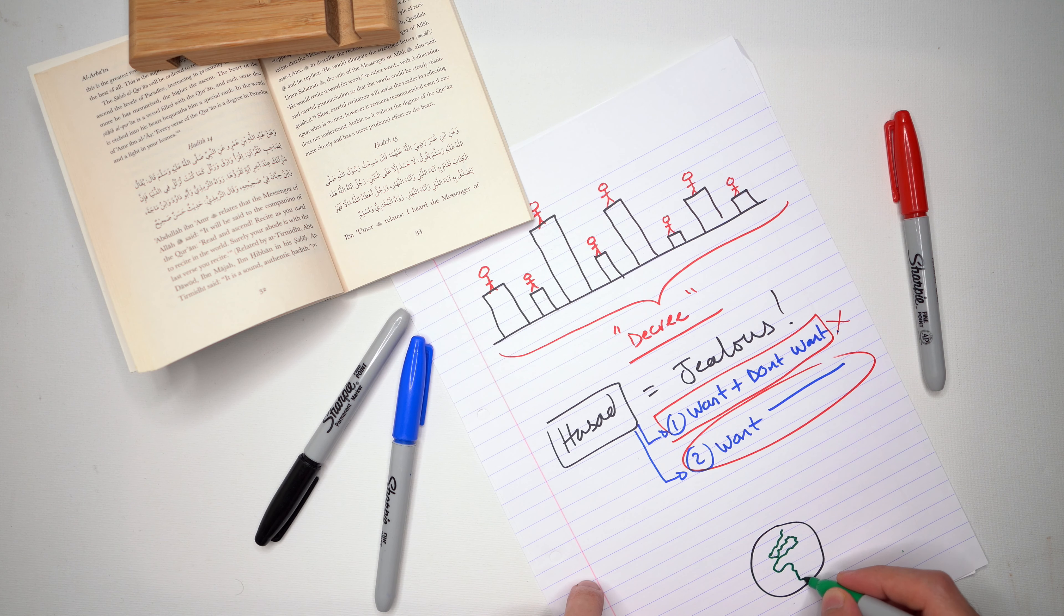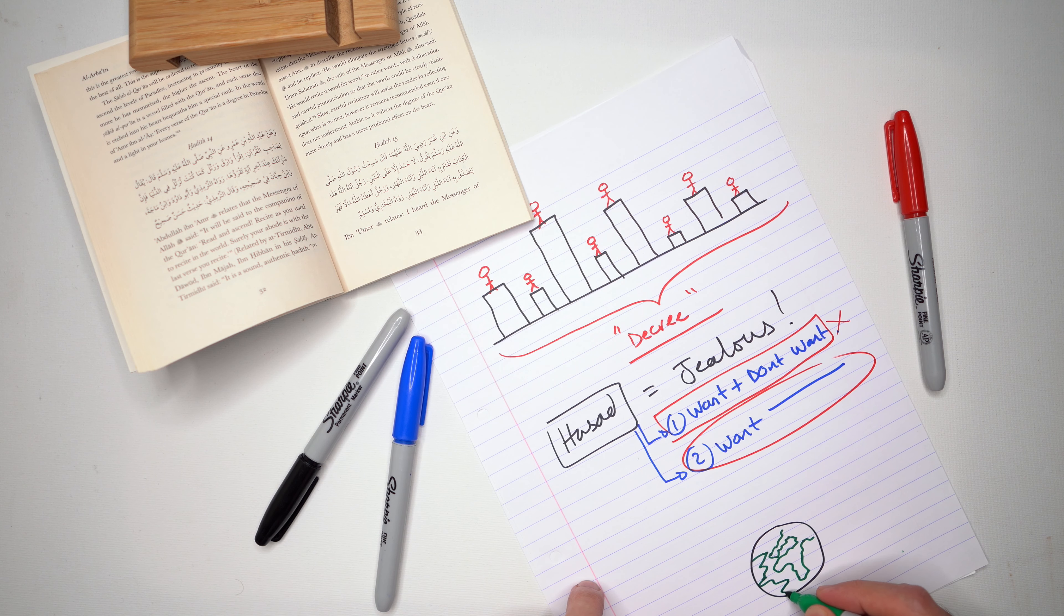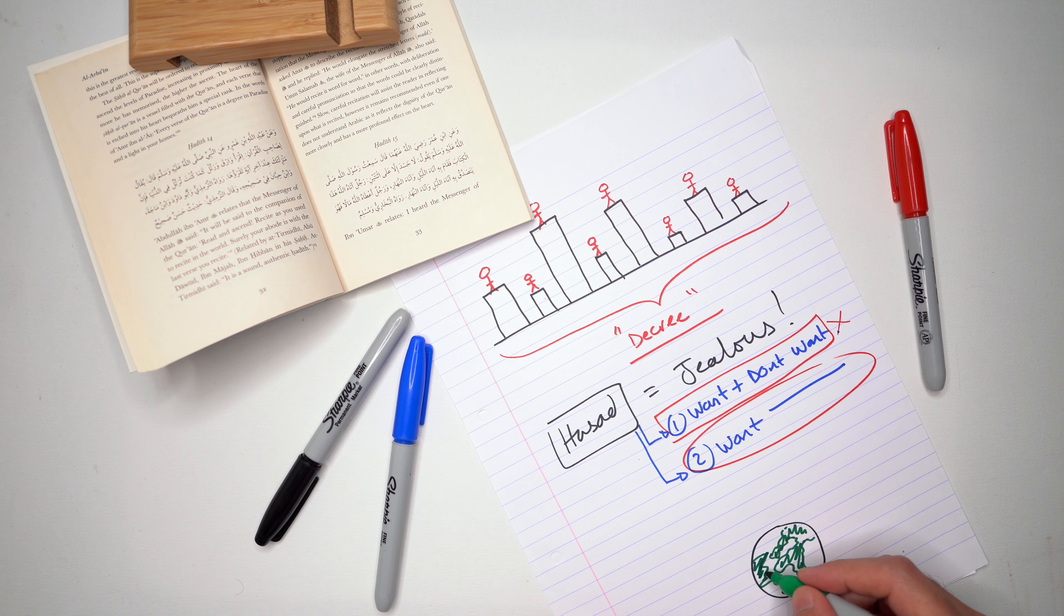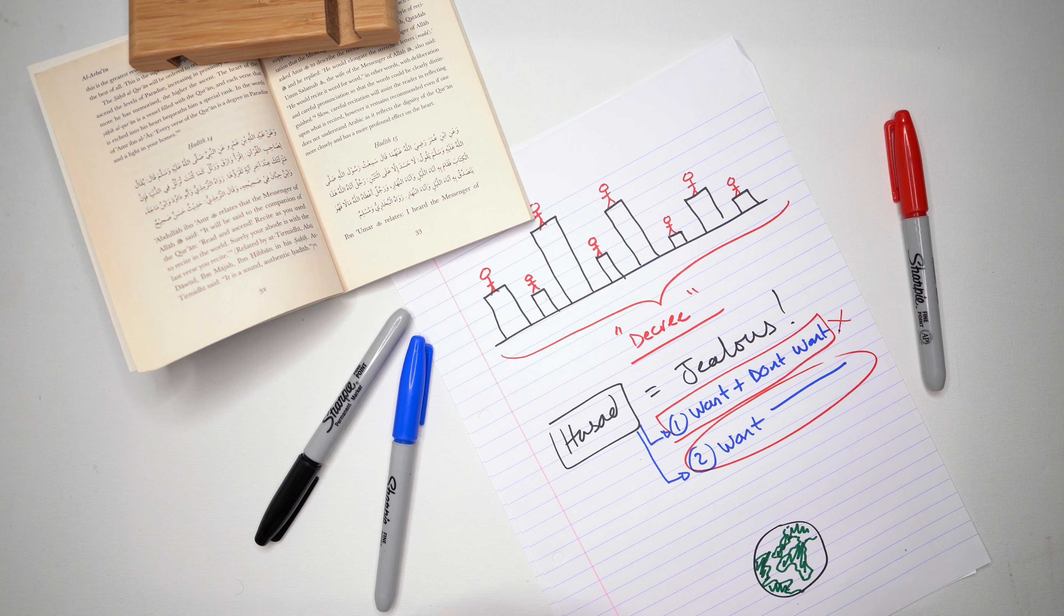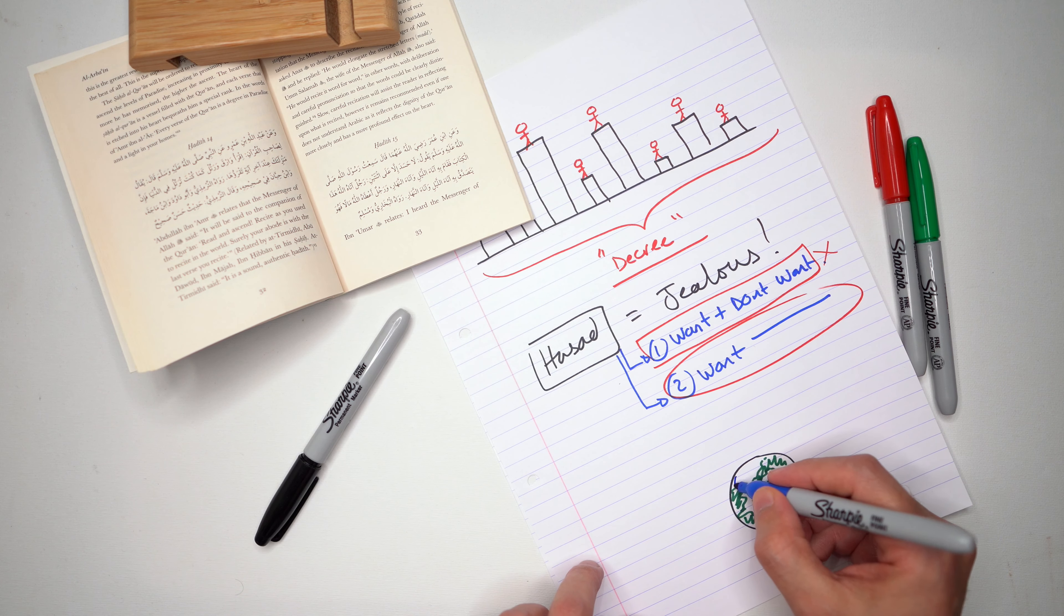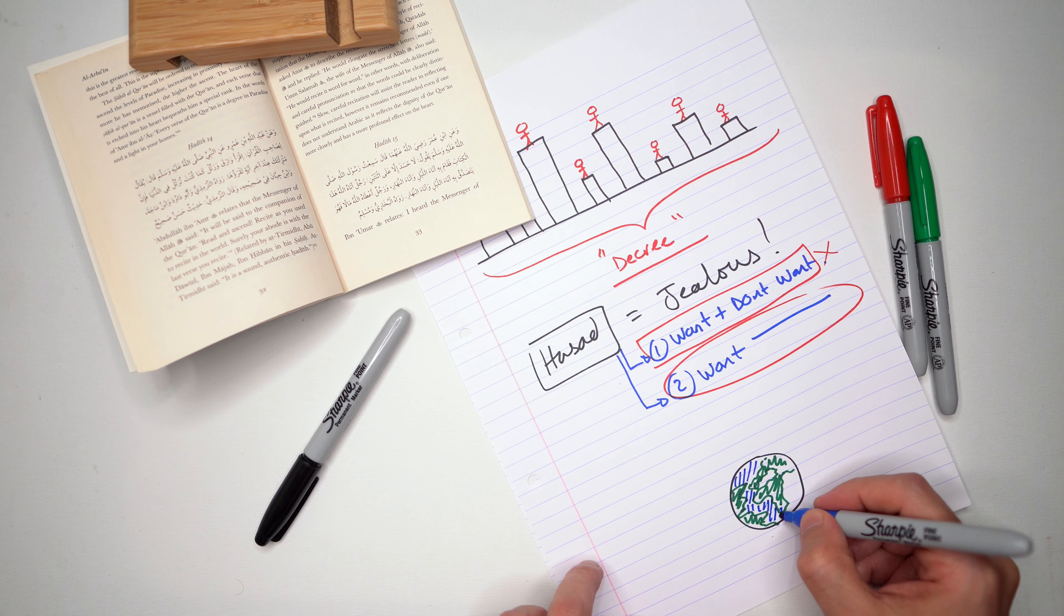And number two is where you want something and you don't really care if they have it or they don't have it. You want that thing. So the first type is not allowed. And there's actually a worse type than this where you don't want something but you don't want them to have it as well. So there's a worse type I'm not going to mention that. So this one's totally not allowed. This one on the other hand is allowed sometimes.